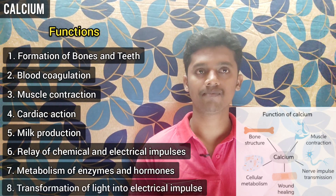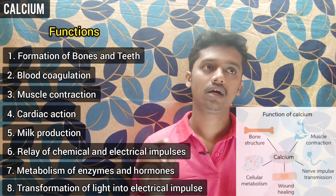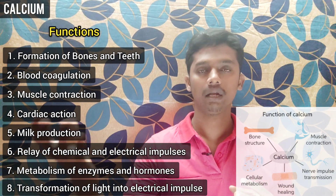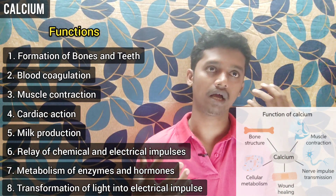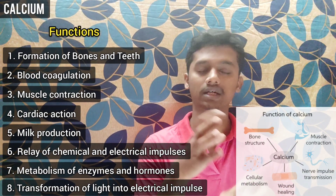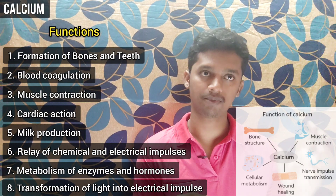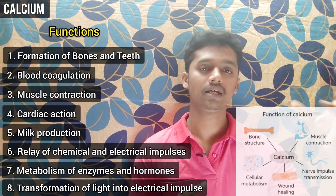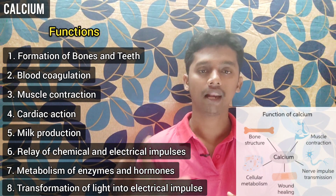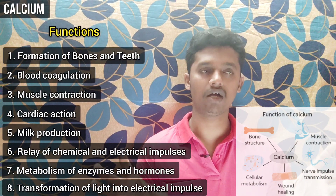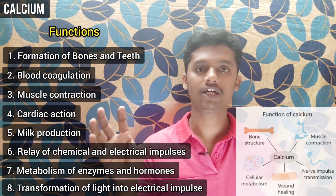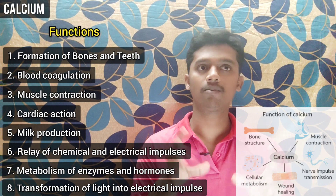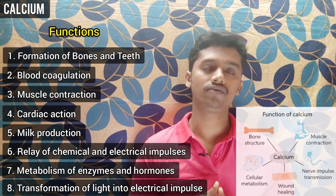Calcium is involved in the transformation of light into electrical impulses in the retina. So in our retina, when we see light, that light is converted into electrical impulses with the help of calcium. This is a crucial role of calcium in our vision.